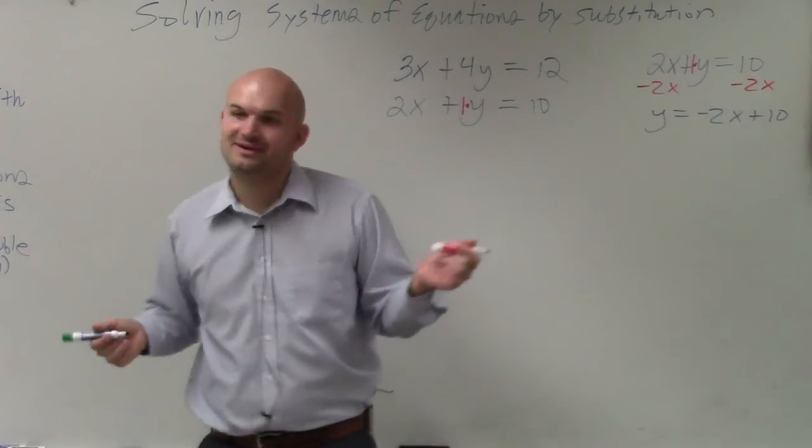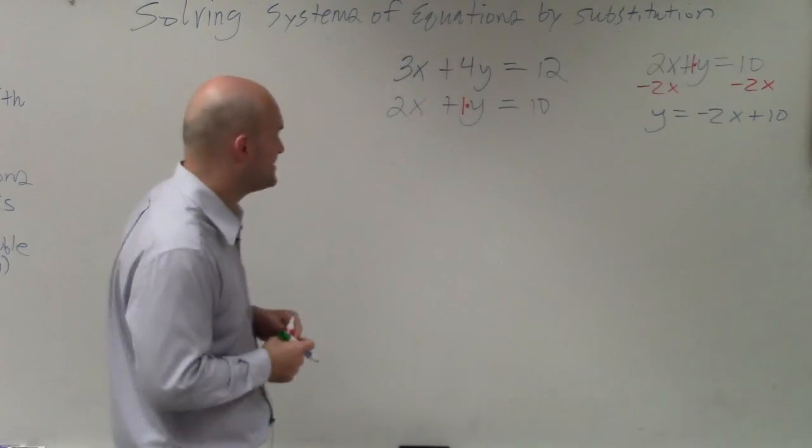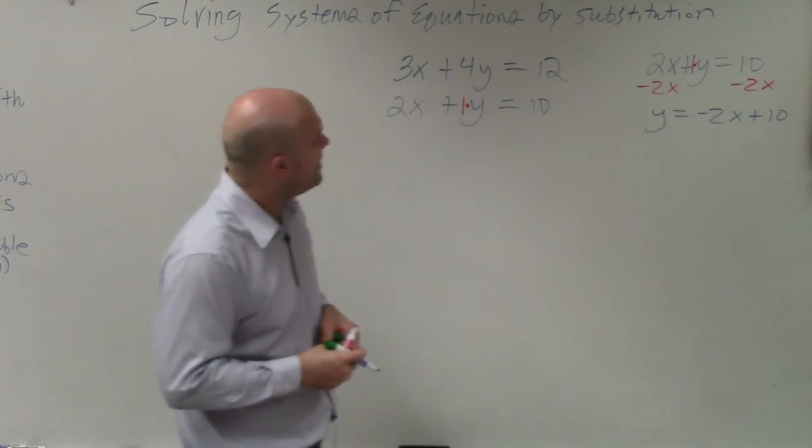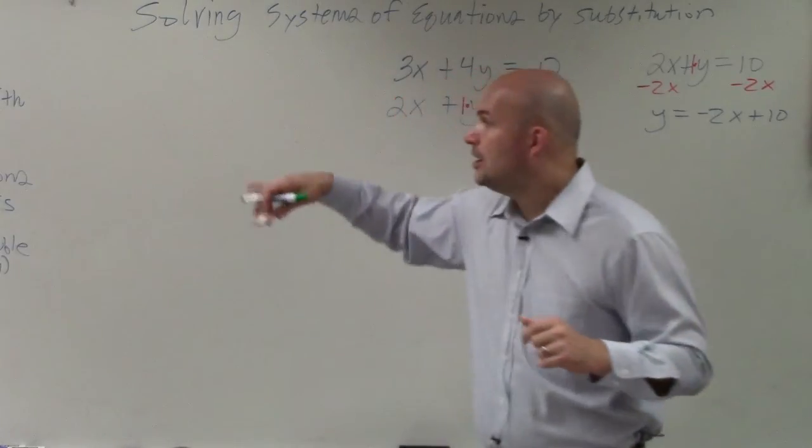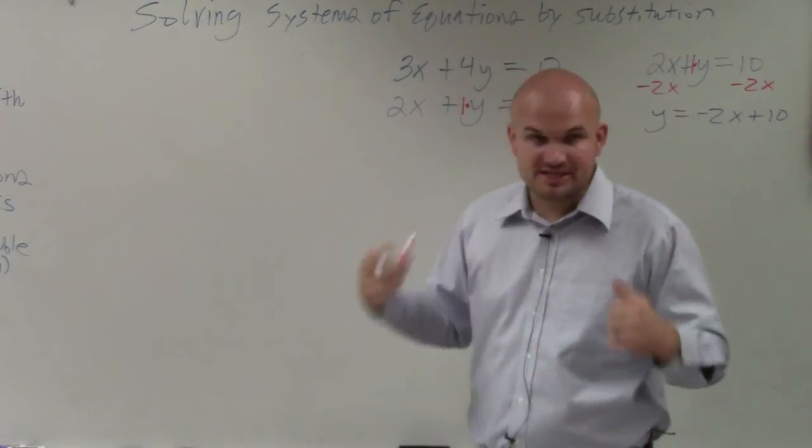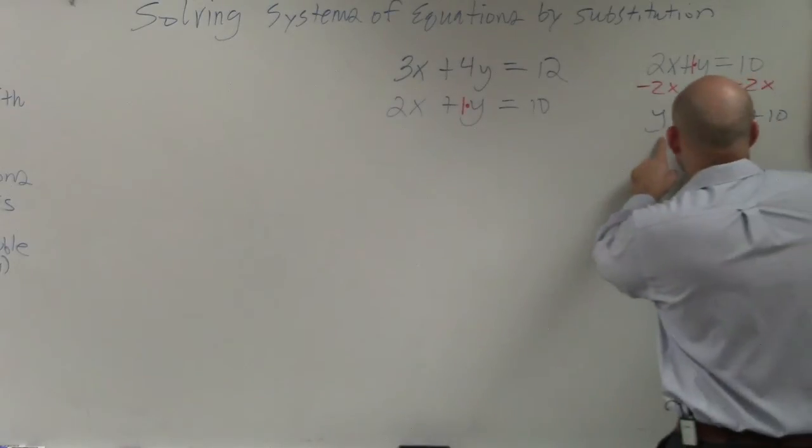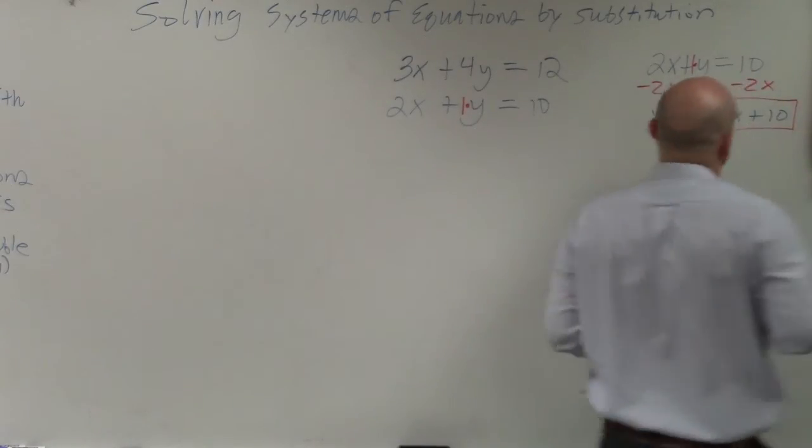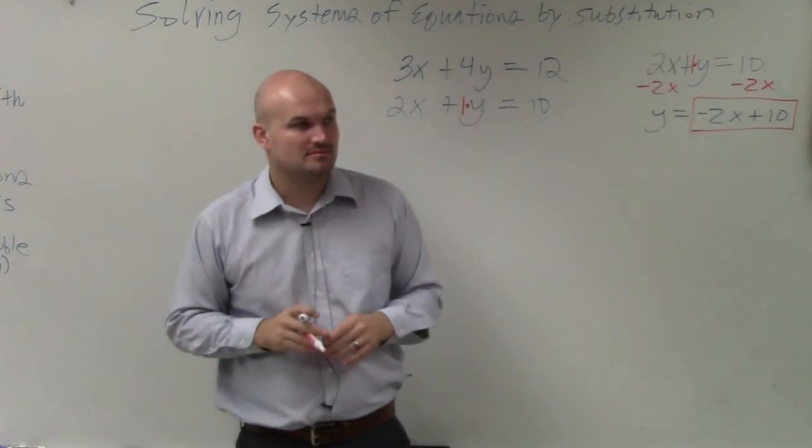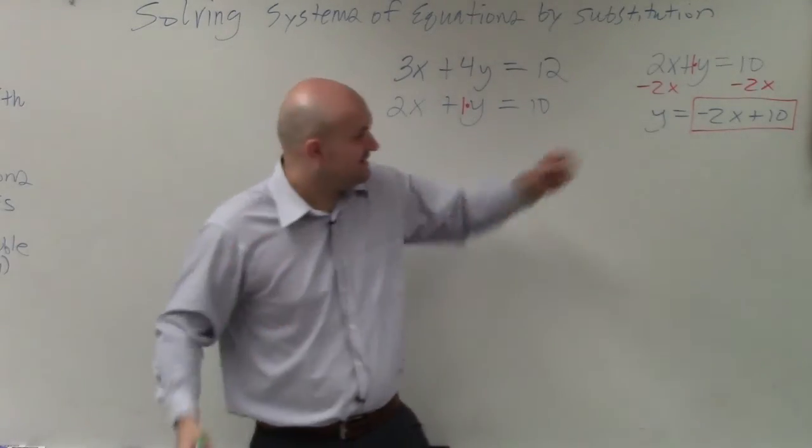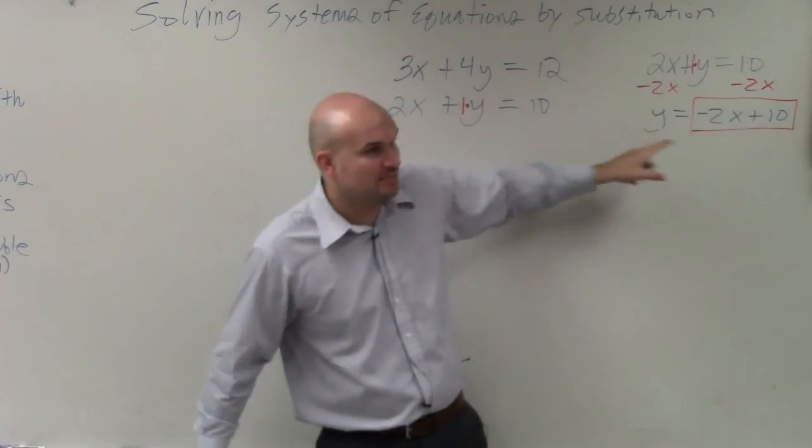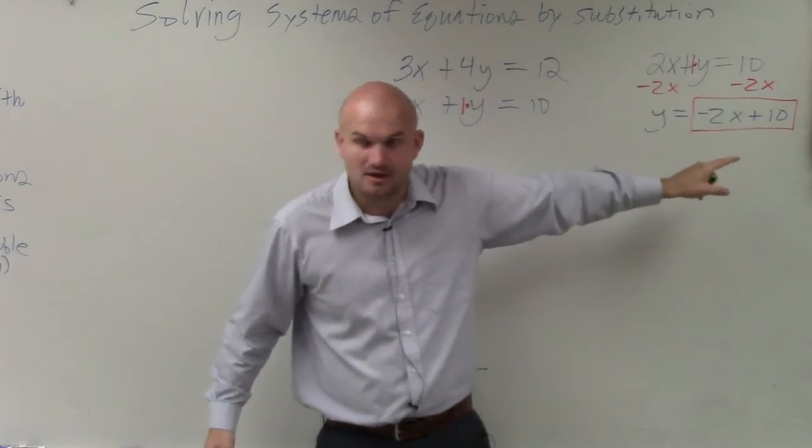Oh, there's another step. I didn't write it in. I didn't finish the process. We'll go back to it, though. Now, step number three. It says plug in the quantity the variable is equal to. So what is my variable equal to? y is equal to the quantity negative 2x plus 10. Does everybody see? This is the quantity that my variable is equal to. Does that make sense?